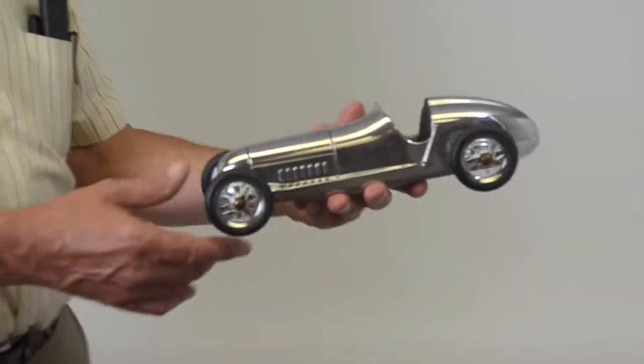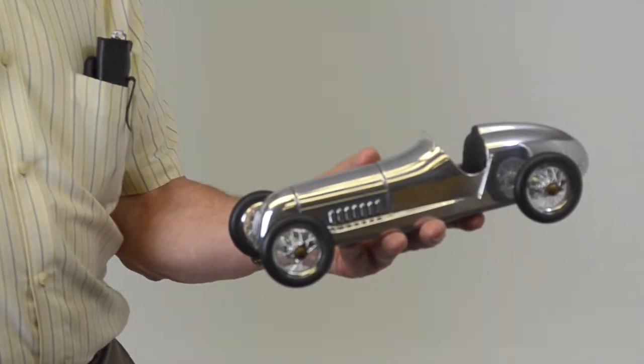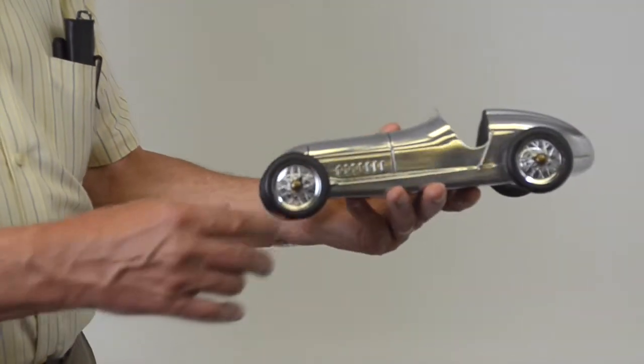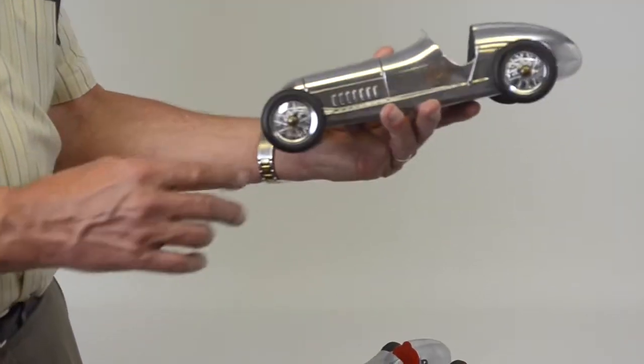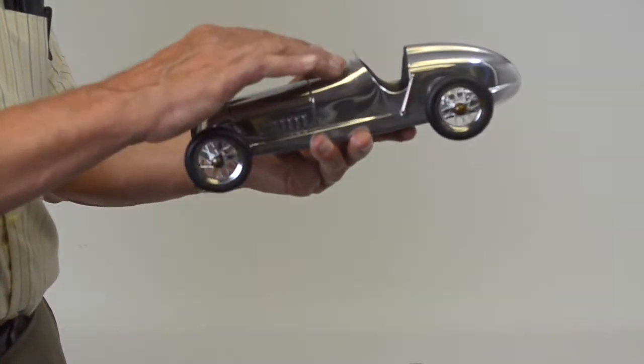And this one, called the Silberfau, which is a German word for silver arrow. It's very similar to the Indianapolis car, but it adds the wire wheels, which are handmade, one spoke at a time, and a little windshield.